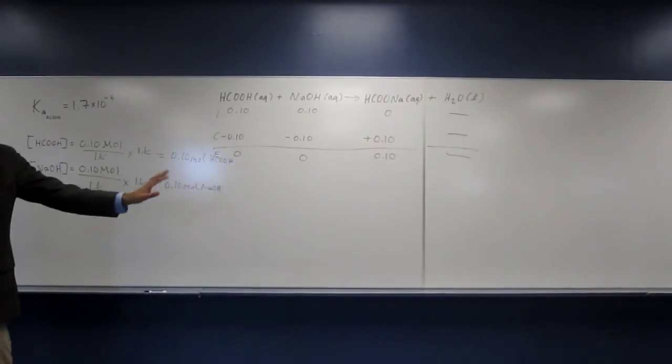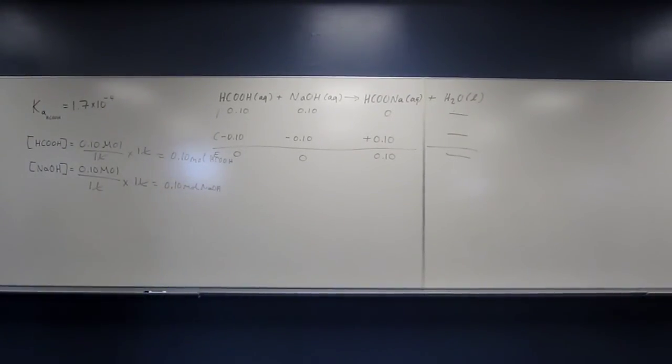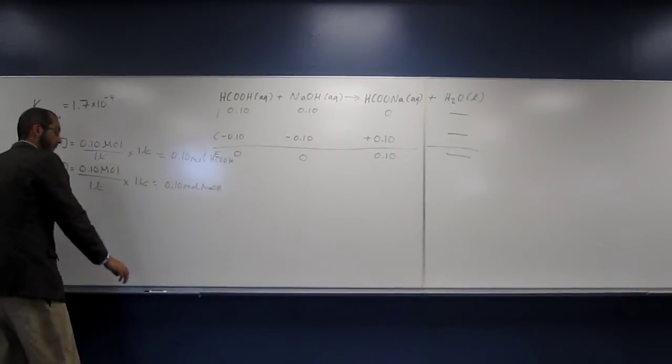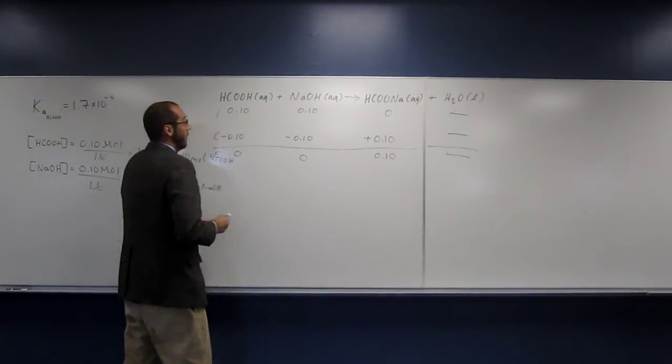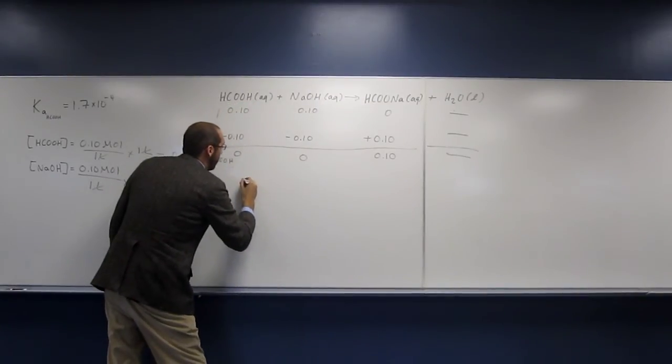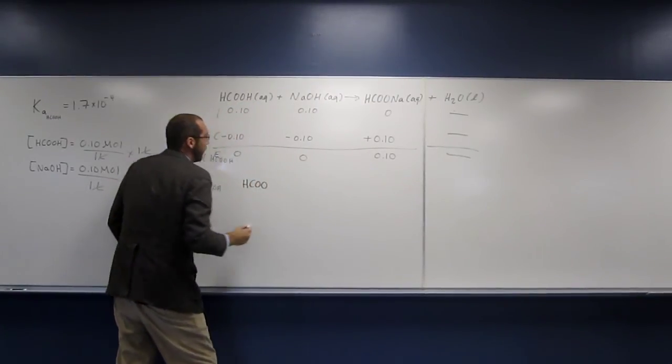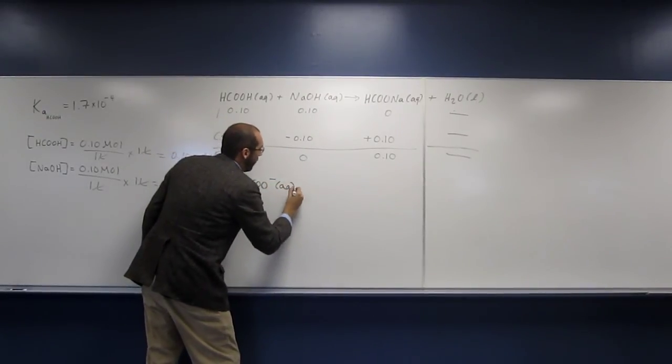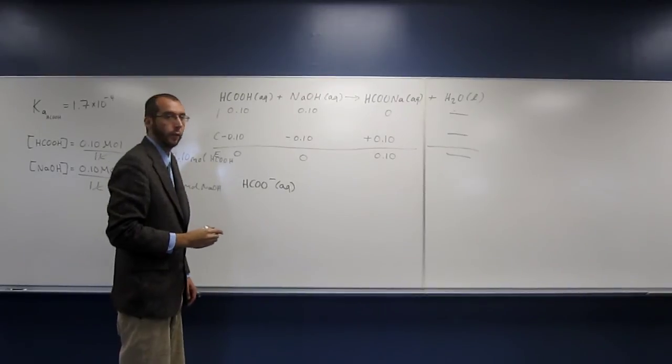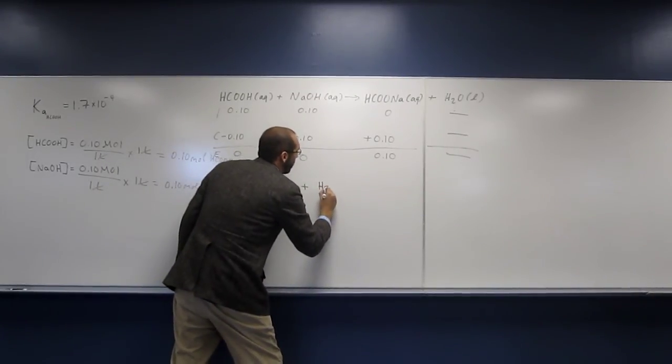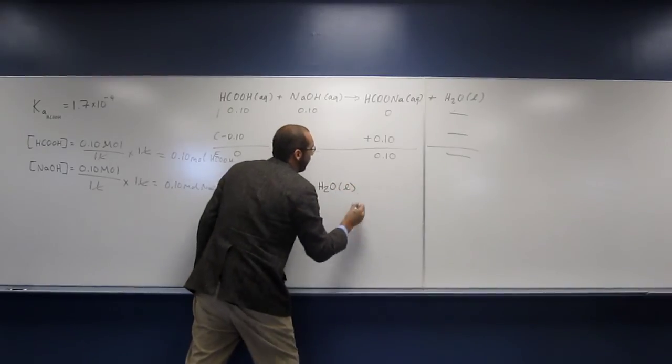So we can't do Henderson-Hasselbalch on this one. So in order to figure out what's going on, we're going to have to write another reaction equation, which is going to be, because we have this stuff, the sodium formate, so HCOO. And I'm just going to write it as the conjugate base. Because remember, that sodium is a spectator ion, so it's not going to participate in the reaction.